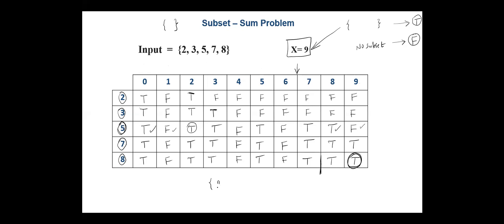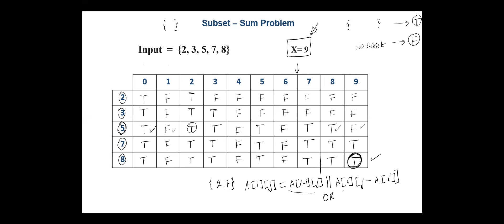According to the dynamic programming solution for this problem, we can tell if there is a subset that sums to the given value. For programming purposes, the entry A[i][j] is filled according to the following rule: the value is the OR of the above cell A[i-1][j] and the cell A[i-1][j minus A[i][j]]. If any of these values is true, then A[i][j] is true. It is false only if both values are false.